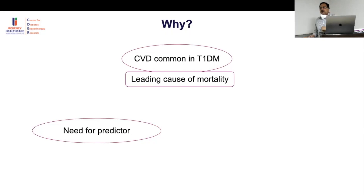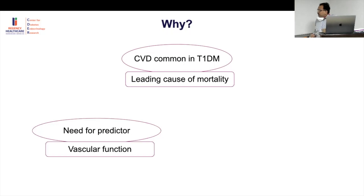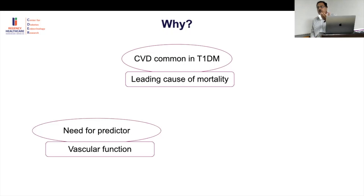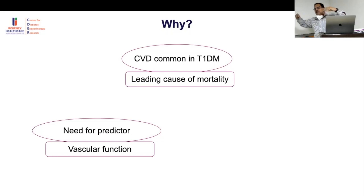Children with type 1 don't have cardiac problems now but may later, so a surrogate predictor is needed. They can't follow children for 25 years for cardiac events, so they used a surrogate marker — vascular function. This raises the question: does vascular function actually correlate with long-term cardiac mortality? They're implying that improving vascular function now will improve outcomes later.